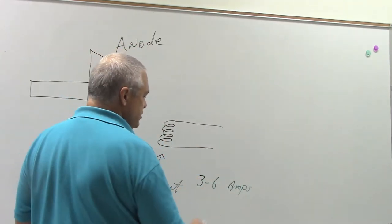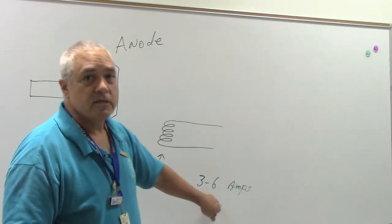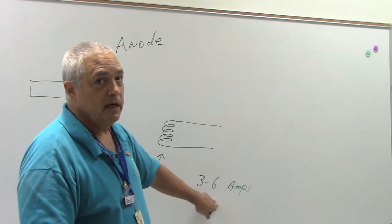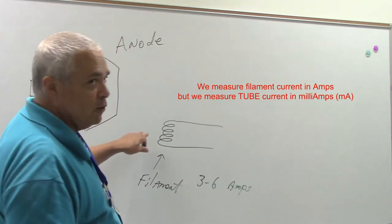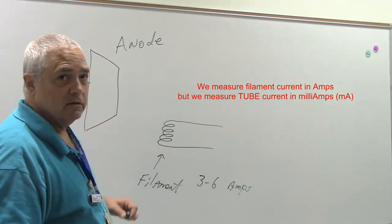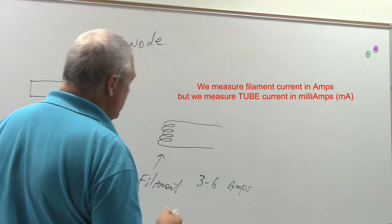3 to 6 amps is my current, which is 3,000 to 6,000 milliamps. That's how we measure our current going across the bridge here that we're about to create. Okay.